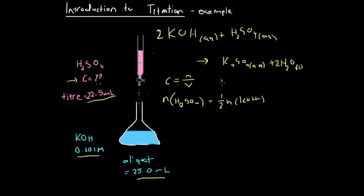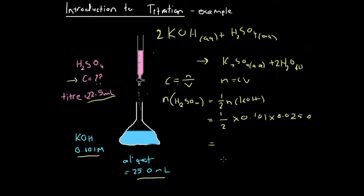We know that if we rearrange C = n/V, we get n = C × V. So the moles of potassium hydroxide in the aliquot equals the concentration, 0.101, multiplied by the volume in litres. Working that out gives us 0.00126 moles. That's the moles of sulfuric acid that we have.